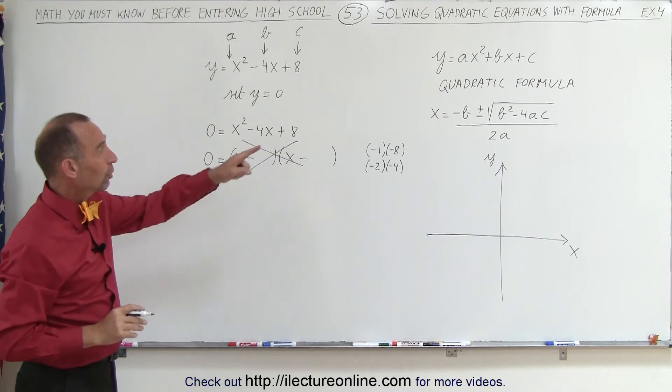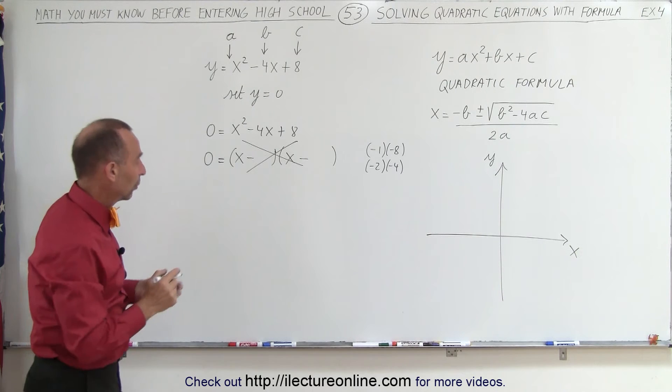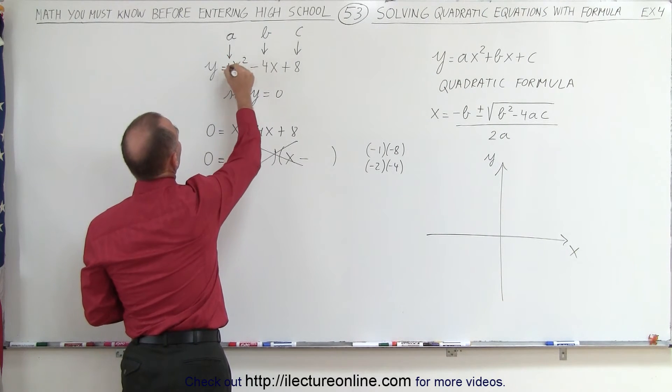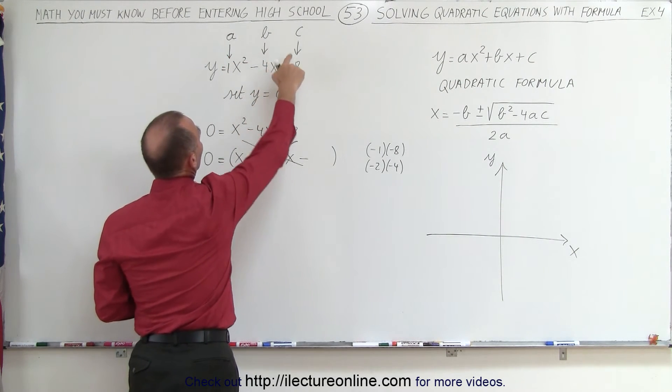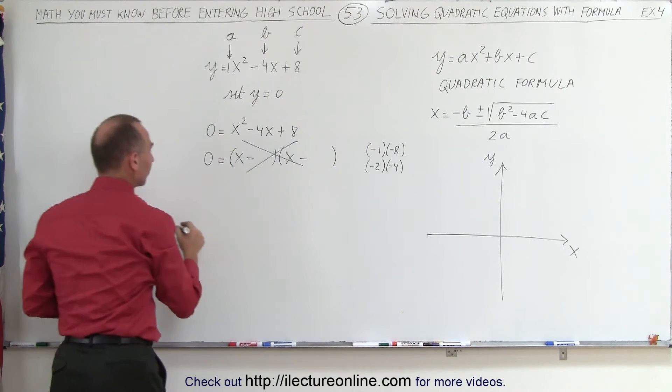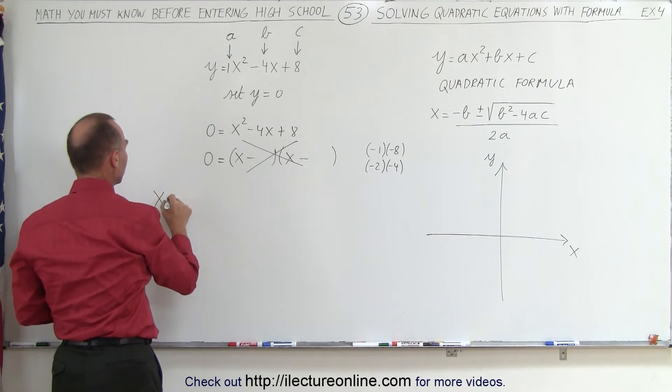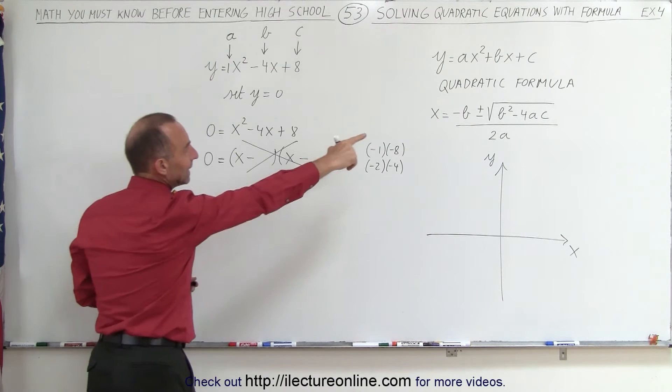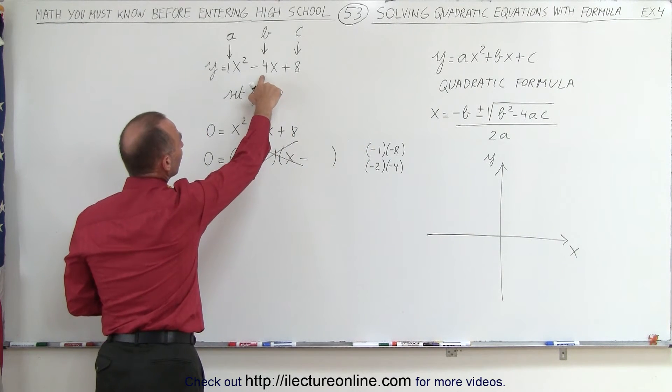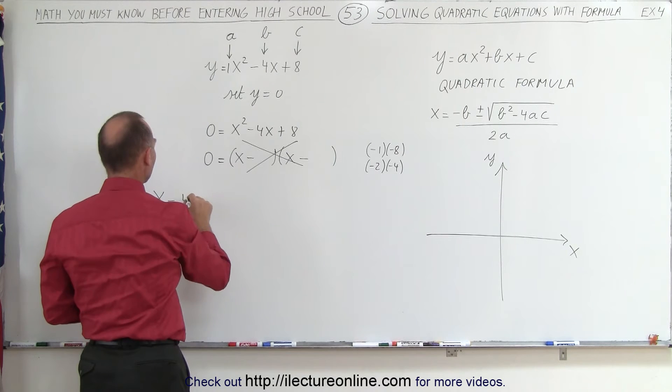So I'm going to use the quadratic formula instead, realizing again that a is positive 1, b is a negative 4, and c is an 8. And then it says that the solution to the quadratic equation, x is equal to negative b. Since b is negative 4, negative b would be a positive 4.